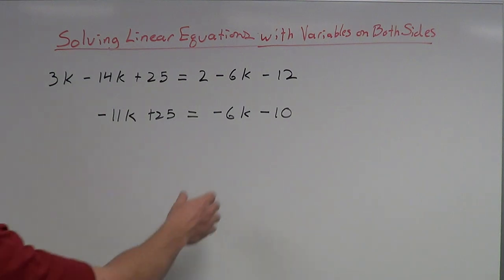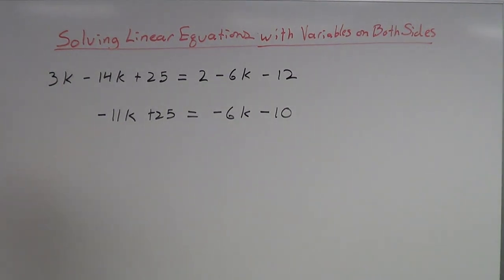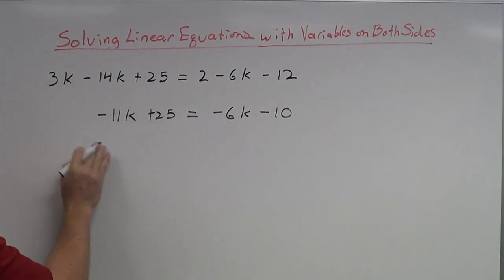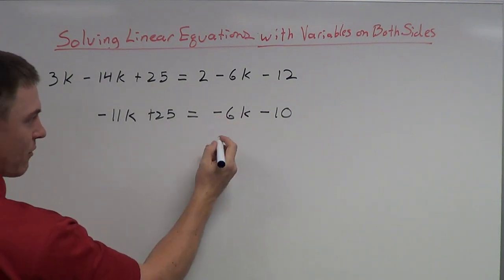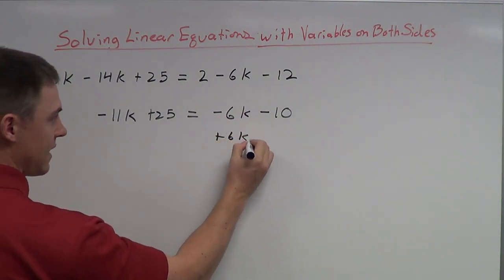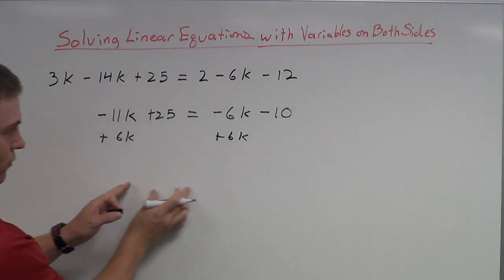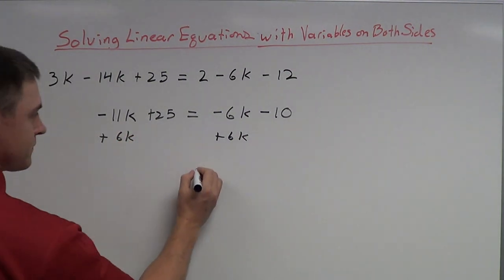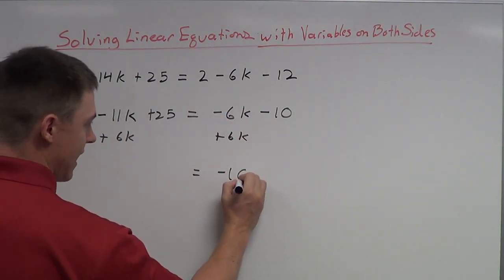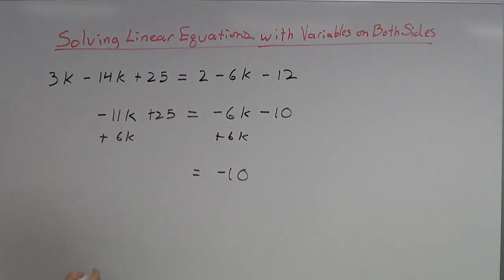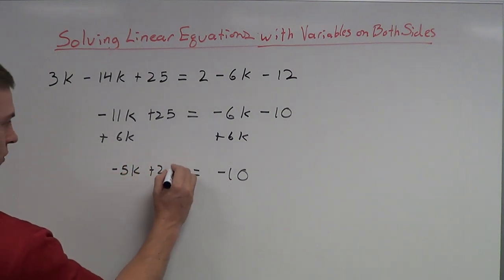I want to take this negative 6k and move it over to the other side. Since it's a negative 6k, I'm going to add 6k to both sides. That will move it over to the other side — that goes to 0, and I'm left with negative 10 on that side. Negative 11 plus 6 gives negative 5k plus 25.